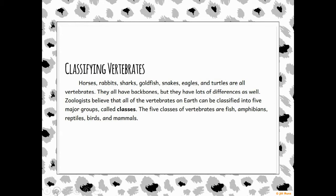You're going to see this paragraph that says 'Classifying Vertebrates.' Let's read it together. Horses, rabbits, sharks, goldfish, snakes, eagles, and turtles are all vertebrates. They all have backbones, but they have lots of differences as well. Zoologists believe that all of the vertebrates on earth can be classified into five major groups or classes.